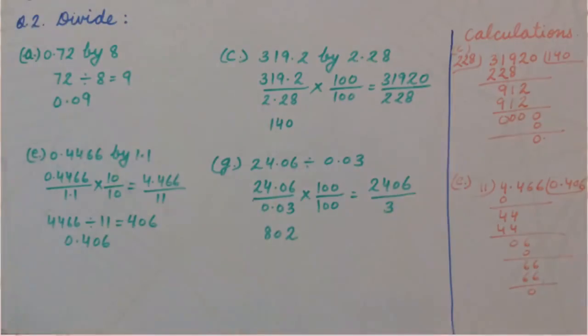Let's start exercise 3C, question number 2. Divide part A: 0.72 by 8.